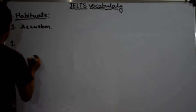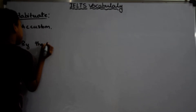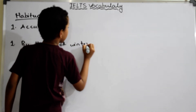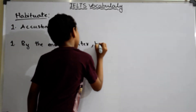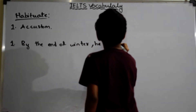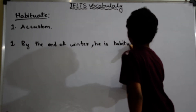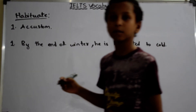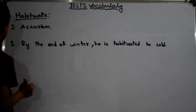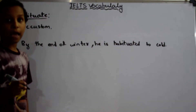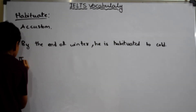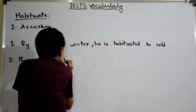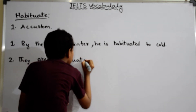Habituate example sentences are: By end of winter, he is habituated to corn. Second one is, they are habituated to corn.